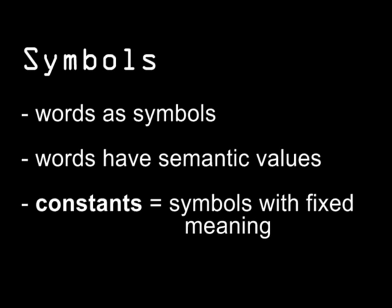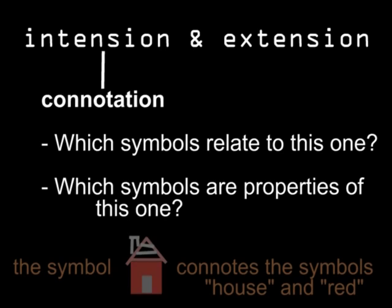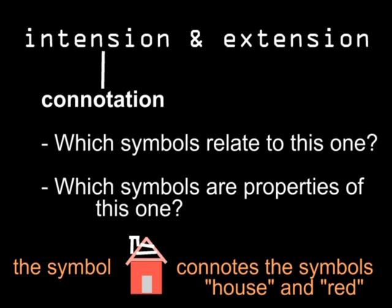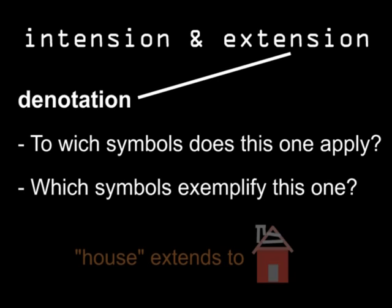These meaningful constants can relate to one another in a variety of ways. Two broad basic relationships are intension and extension. Intension refers to what a word connotes — other words commonly associated with that word, or other words that are properties of that word. This connotes house, red, and so on. Extension is what a word denotes — its definition or its examples. For example, 'house' extends to this.